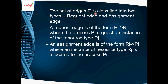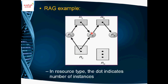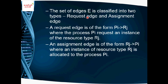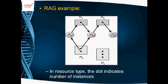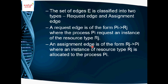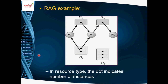Edges in the RAG are of two types: request edges and assignment edges. A request edge goes from a process Pi to a resource Rj, meaning the process is requesting that resource. An assignment edge goes from a resource Rj to a process Pi, meaning the resource has been assigned to that process.